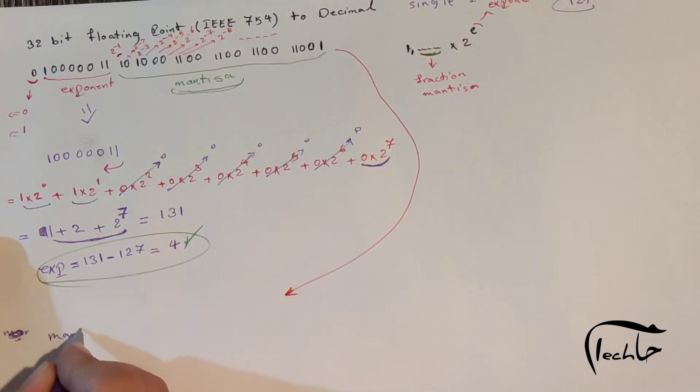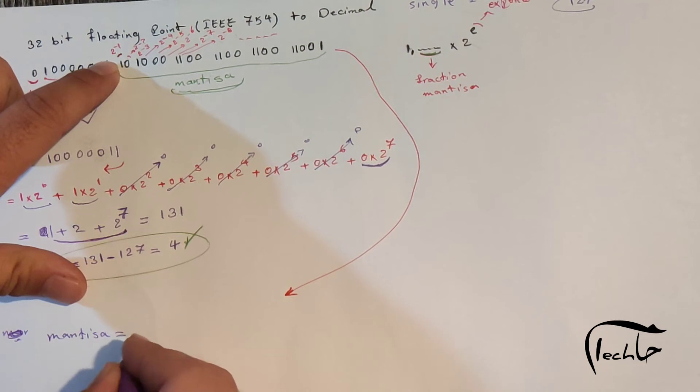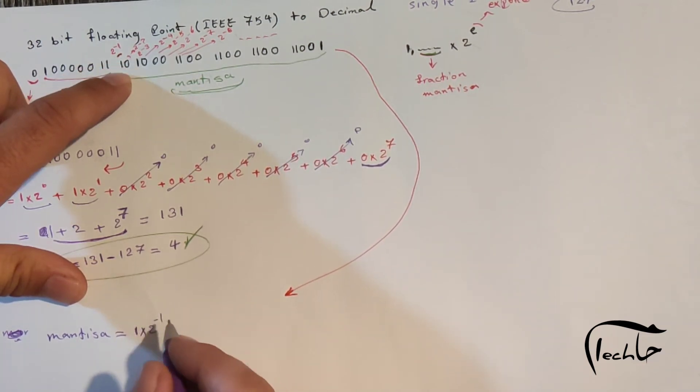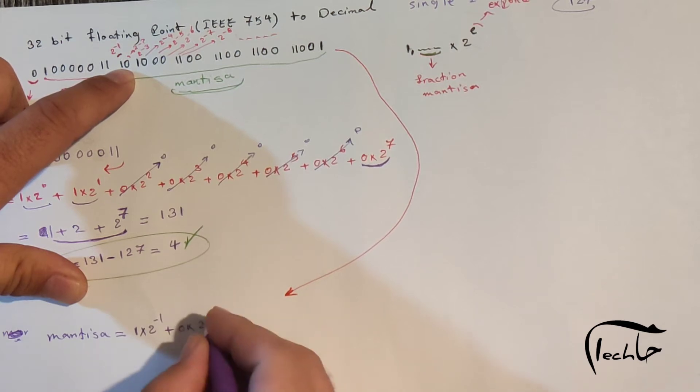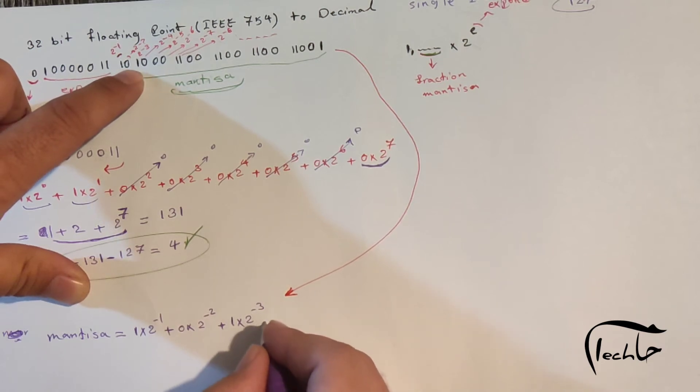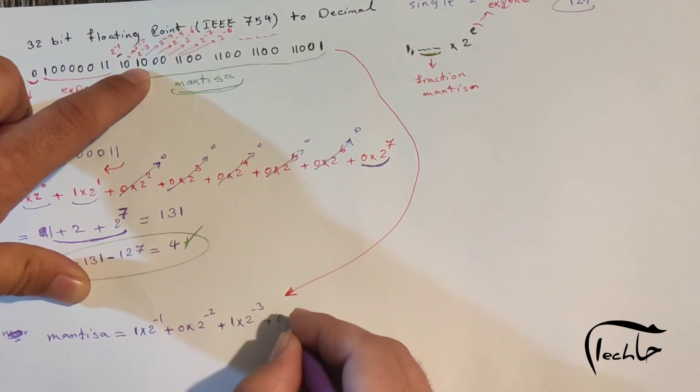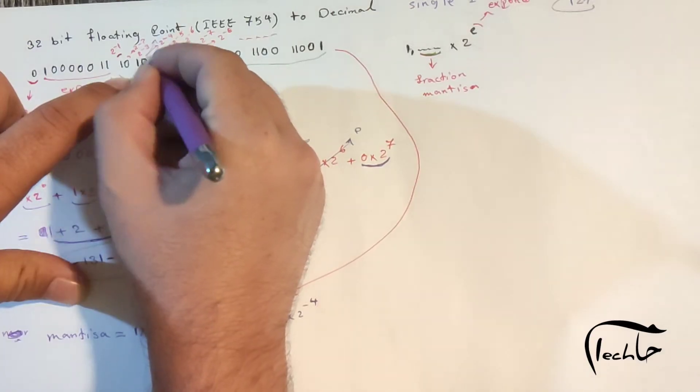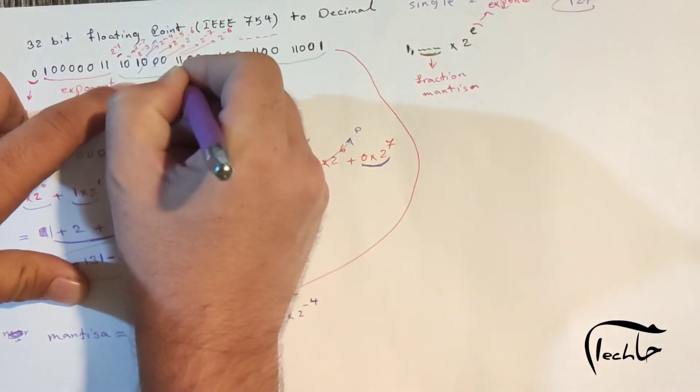Mantissa equals 1 times 2 to negative 1 plus 0 times 2 to negative 2 plus 1 times 2 to negative 3 plus 0 times 2 to negative 4. I eliminate the zeros and write the significant terms.